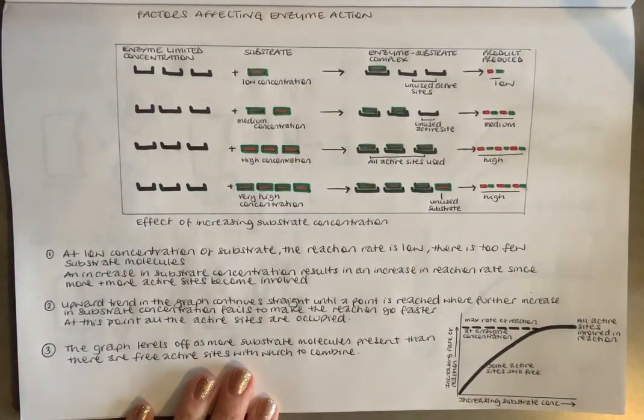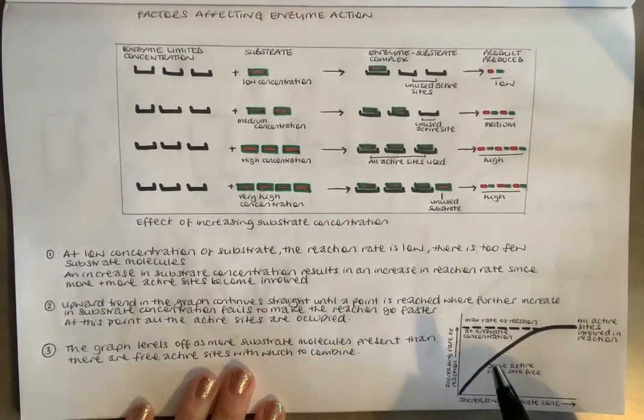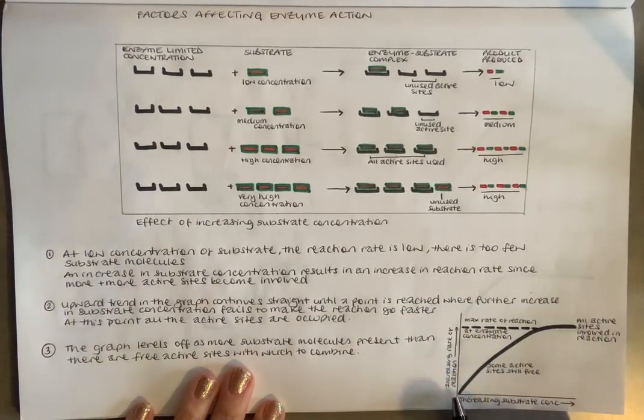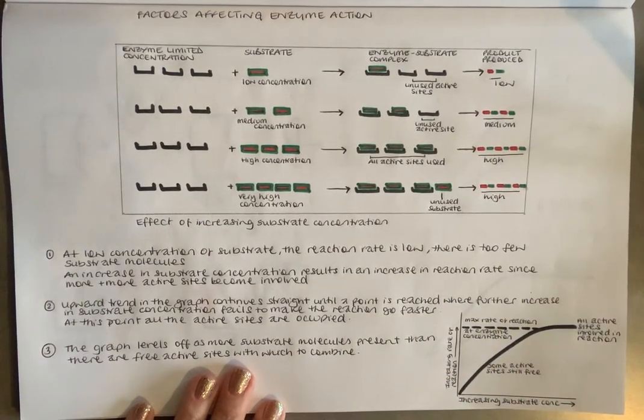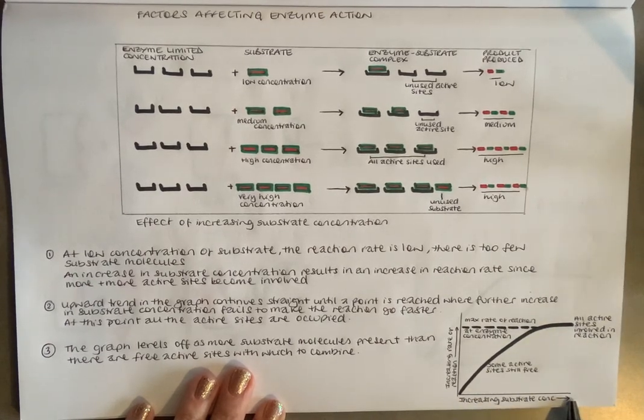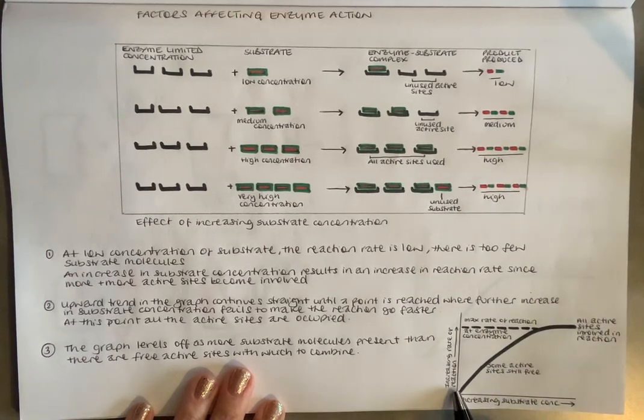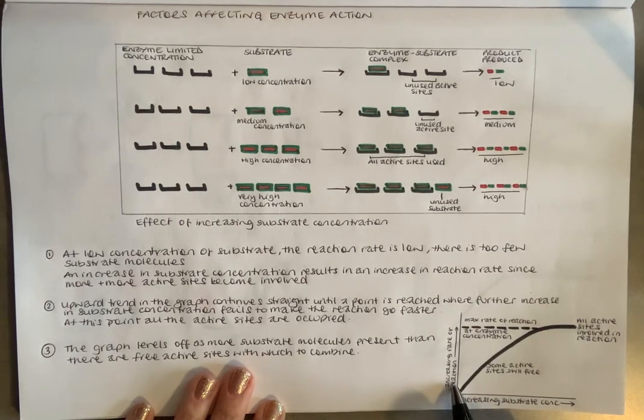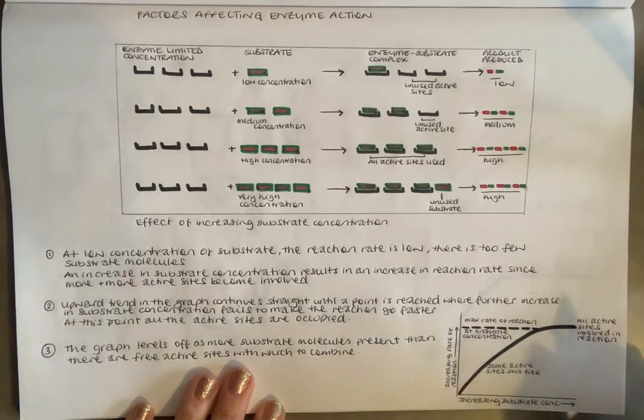So way down here in the corner, there's a small graph. This is the usual one that you would see in your teacher slides. What this shows is as we increase substrate concentration, what is happening at the active site area in relation to substrate and enzyme.